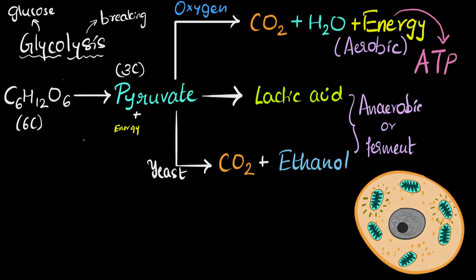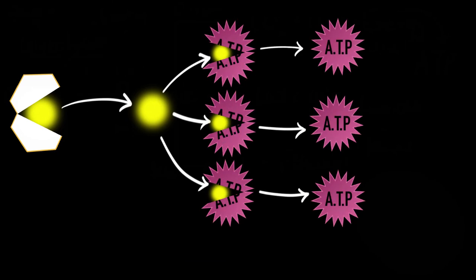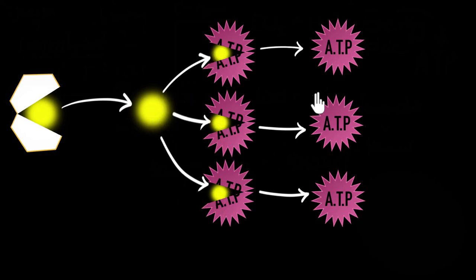In respiration, cells break glucose open and release energy. But instead of using that energy directly, they take that energy and store it in ATP — transferring energy from glucose into smaller packets. That's because breaking glucose releases a lot of energy, and cells do not need that much energy to carry out their functions. So they store it in smaller packets, and whenever cells want to perform work, they just break ATP open — which has just the right amount of energy needed.